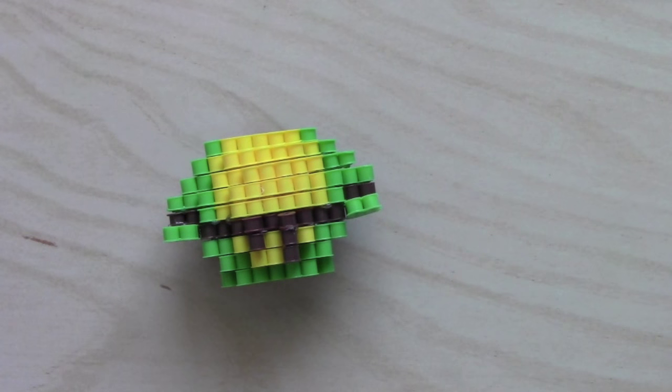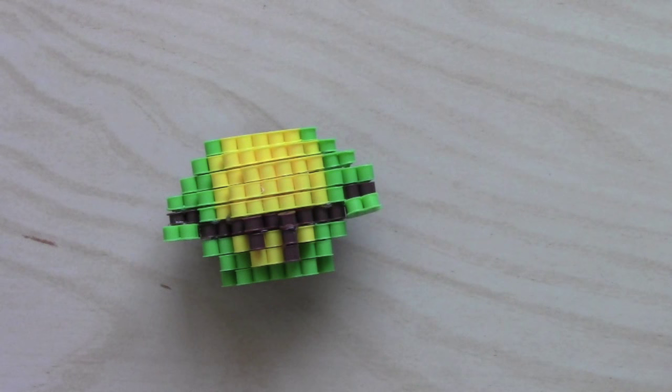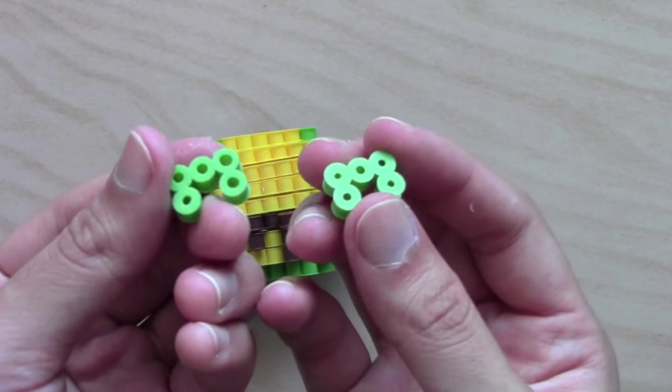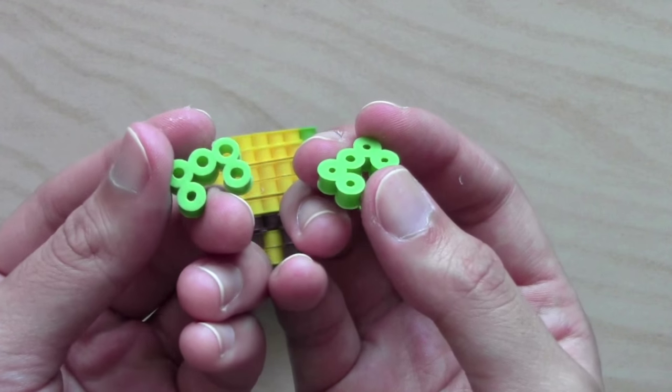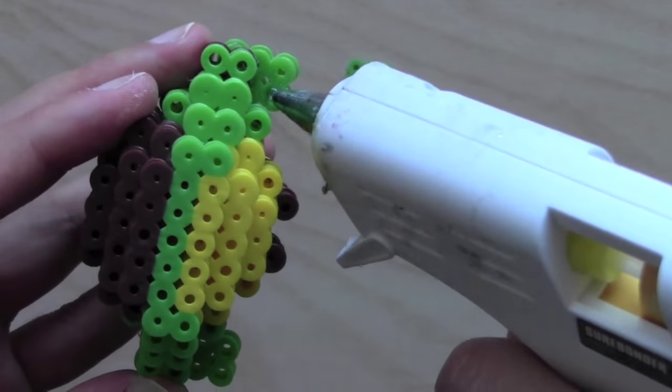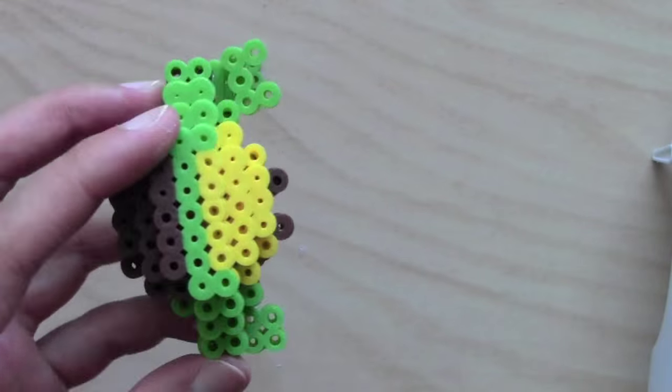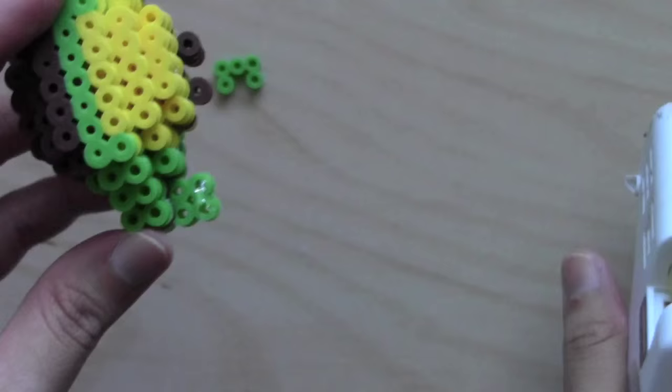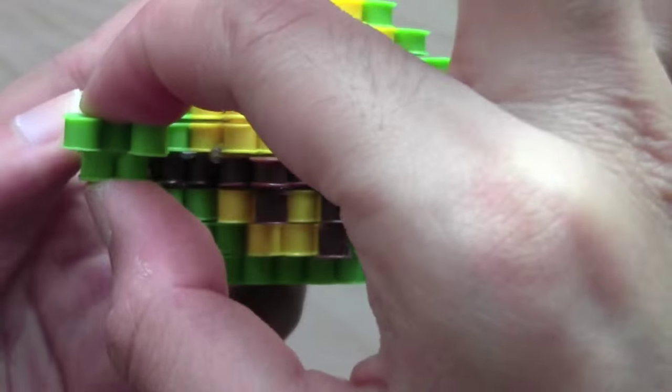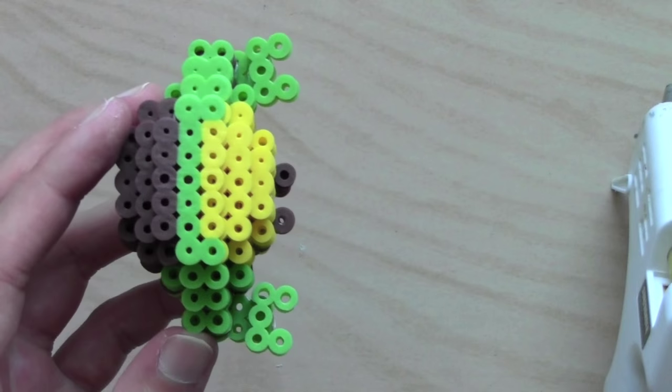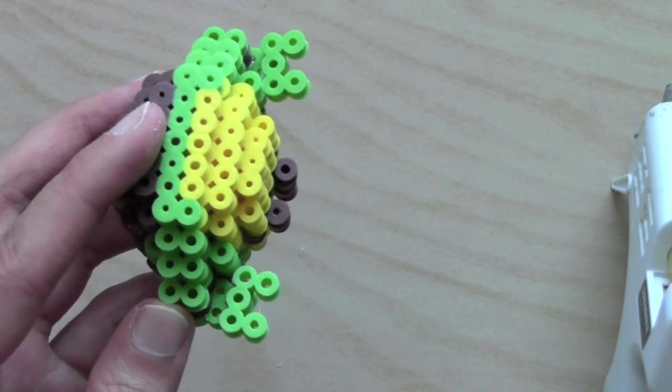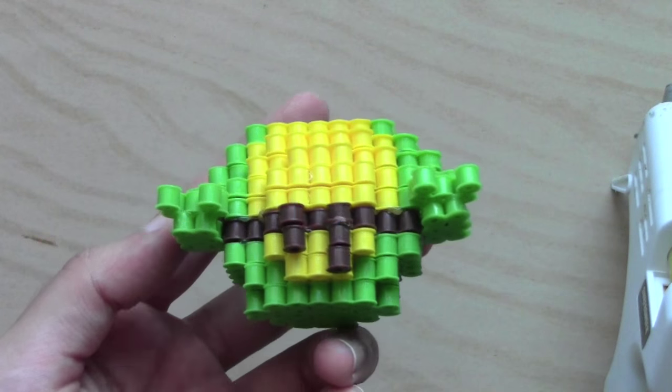Now before assembling the head and the body together, we still have to put on Leo's little hands that he will use to hold his swords. They look like little crab claws for now, but once you put on that sword, it will look really cool.